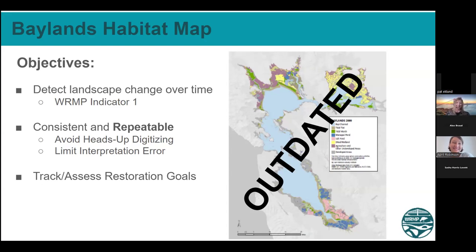The main objective is to really detect landscape change over time. The previous mapping we had is from an effort of the Bay Area Aquatic Resource Inventory in the modern Baylands, developed in 2009. So it was really time for an update to this habitat mapping, but also a manner to create a dataset and a method that we were able to repeat over time and do change detection in a much more efficient manner. The goal is to be consistent and repeatable.